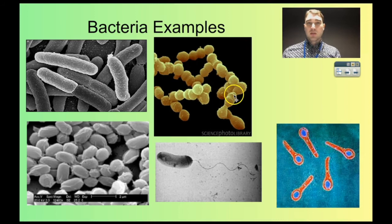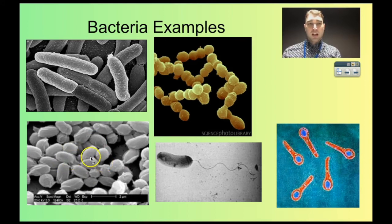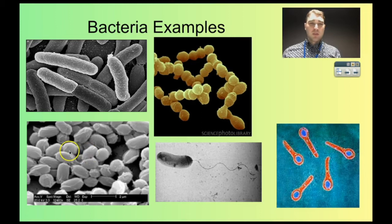This is a Streptococcus bacterium. Streptococcus can cause strep throat, which is where you get a painful throat infection. Down here is Bacillus anthracis — this is anthrax. It's present in soils, can be quite deadly, and many countries have tried to develop it as a weapon. It produces a toxin that's not good for you.